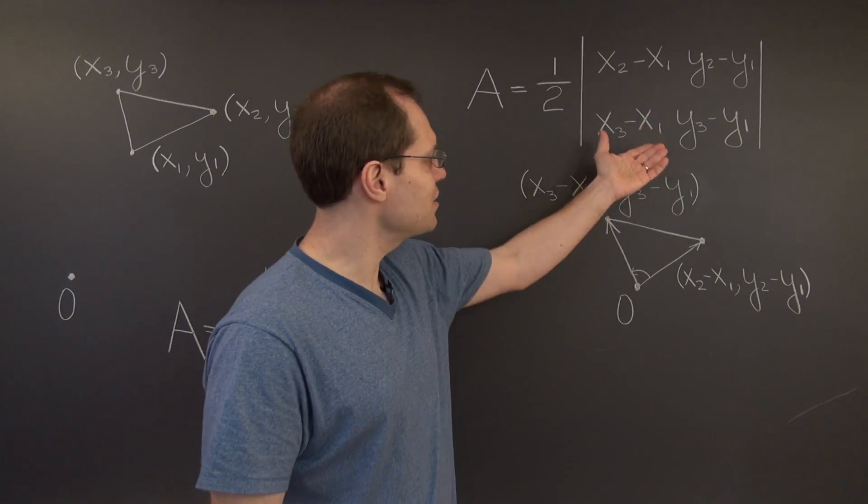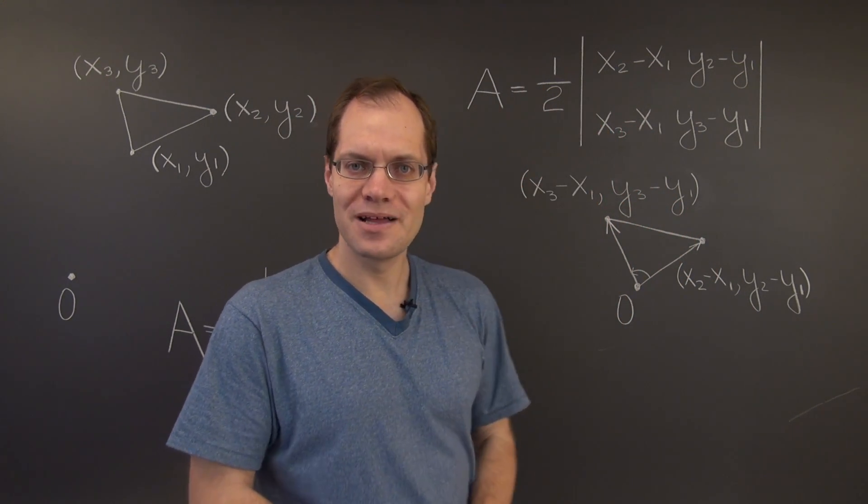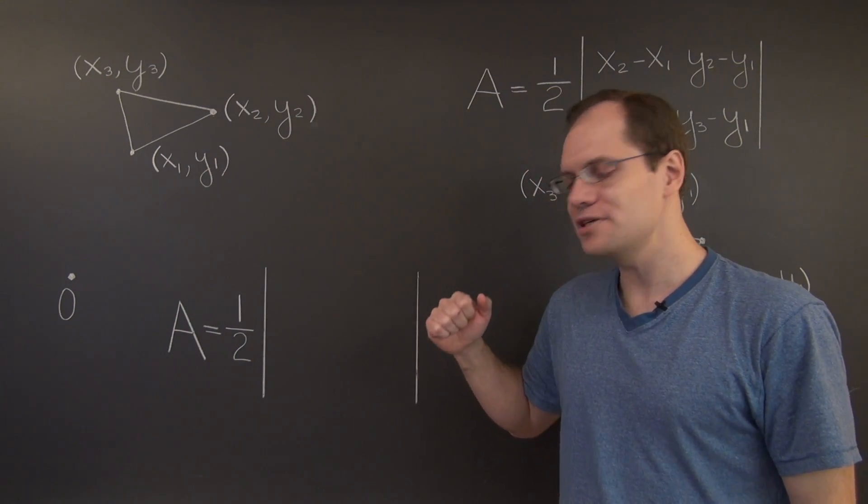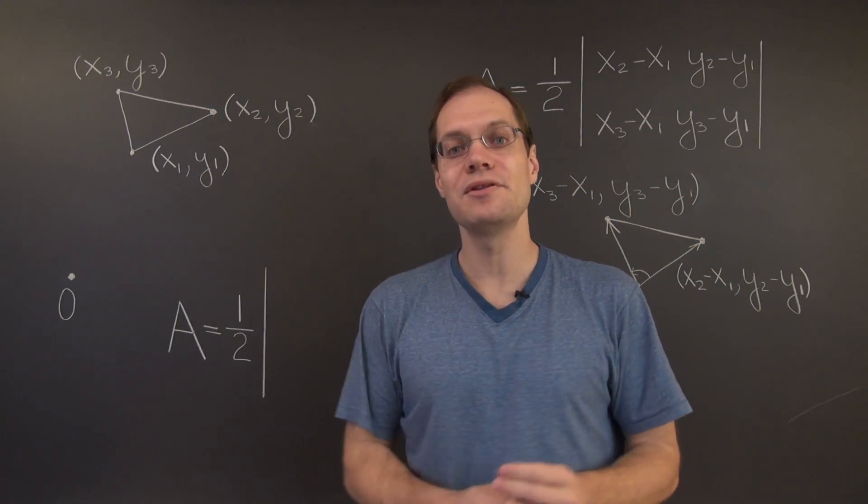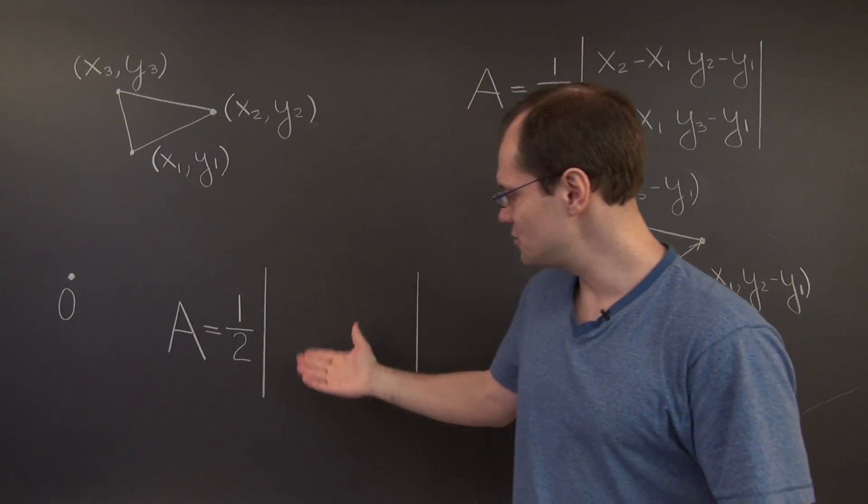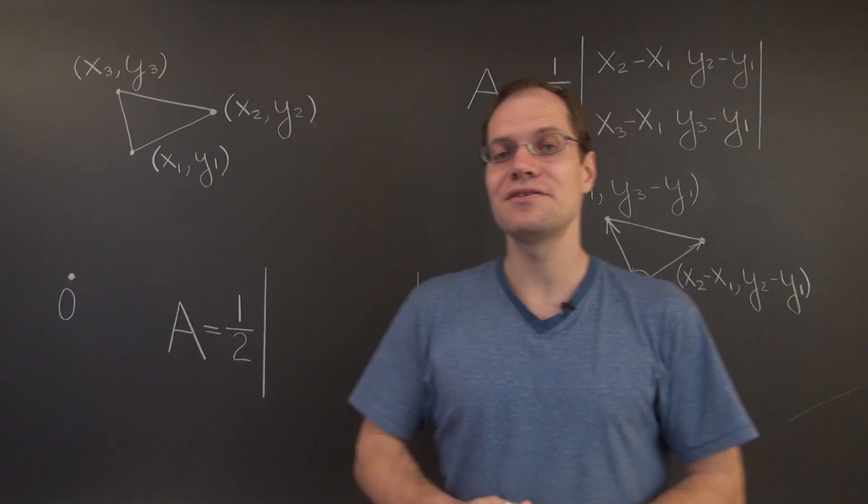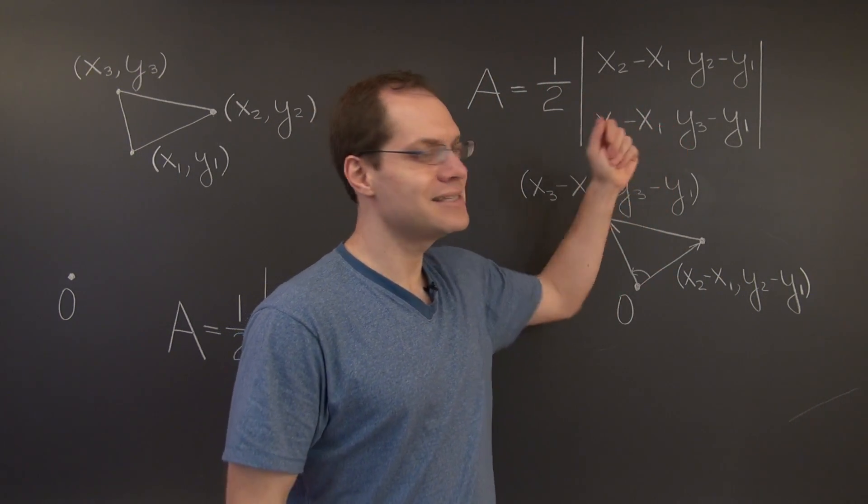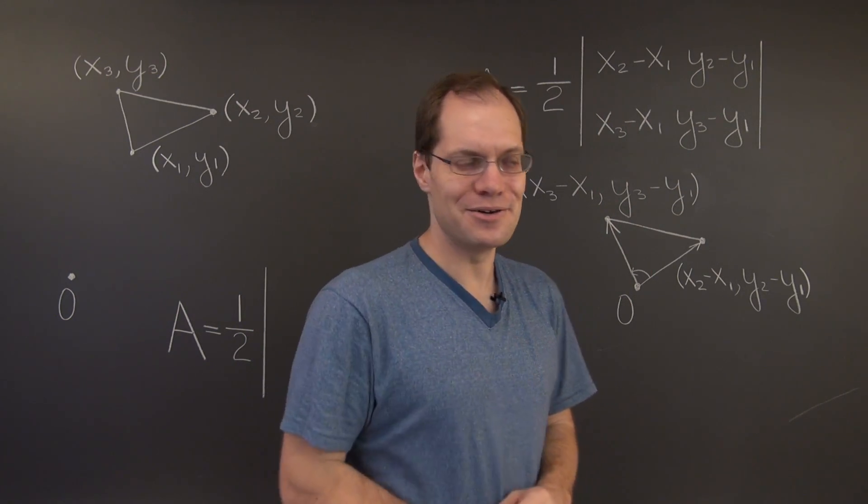Instead of evaluating this 2x2 determinant, I will write down a 3x3 determinant that preserves the symmetry between these three vertices. And then we'll simply observe that this determinant evaluates to the exact same number as this determinant. Here we go.